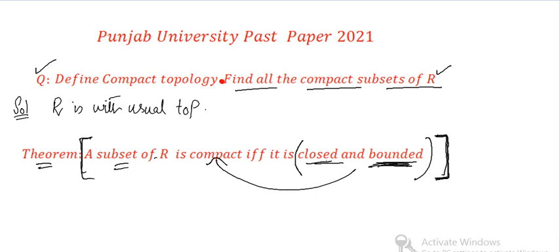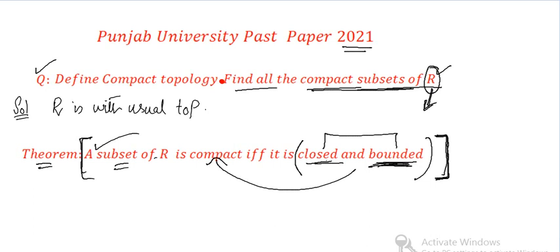This was in your 2021 past paper. If you are thinking that you will find compact subsets one by one, removing any subset — that is not possible, since R is an infinite set. So overall, we give a general concept here: which sets will be compact, based on the criterion of closed and bounded.